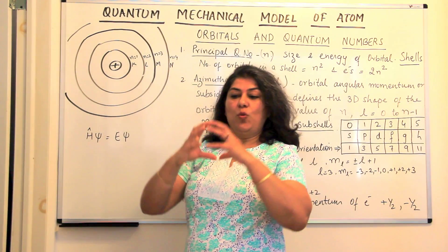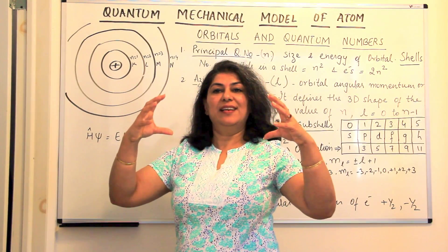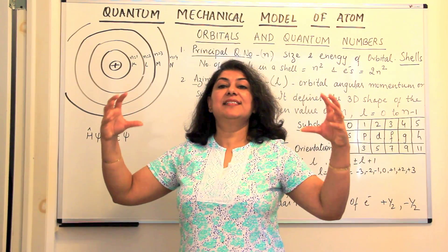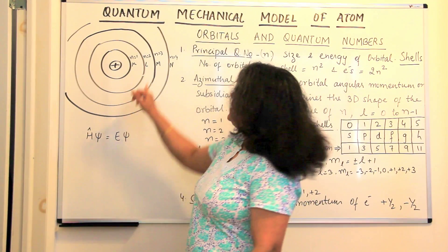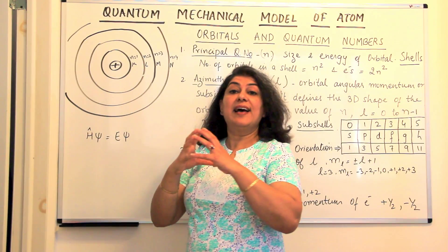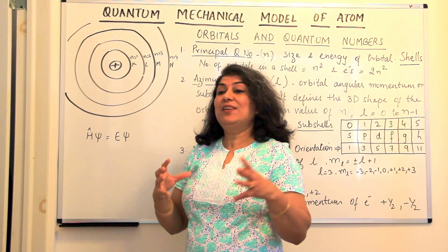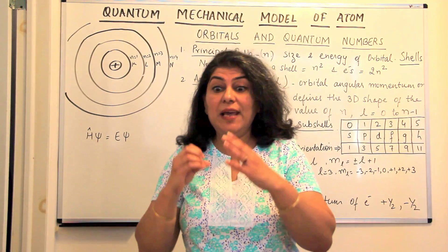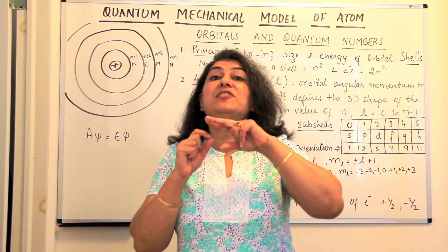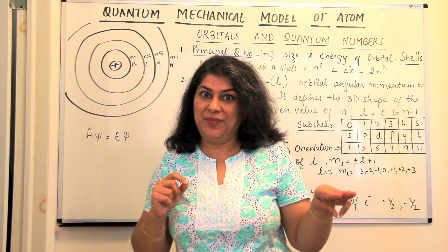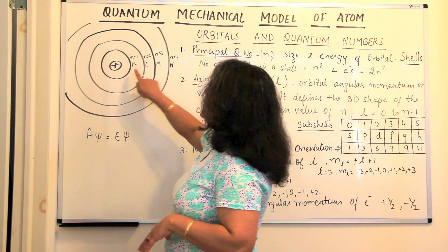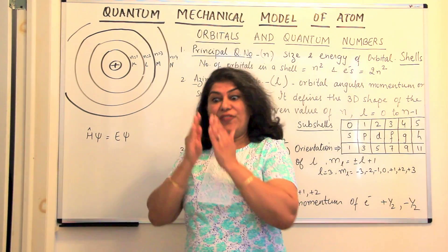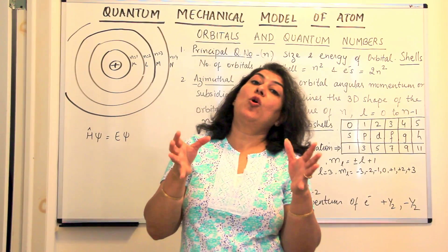As energy increases, you have one shell over the next shell and the next. So shells increase in size as energy increases, and each shell has electrons in it. However, these electrons do not all have the same energy. These shells themselves have divisions — they also have sub-shells inside them. So you have the first shell, second shell, third shell, fourth shell, each further divided into sub-shells.